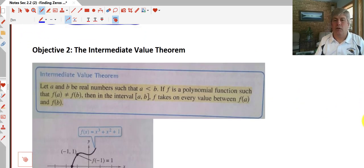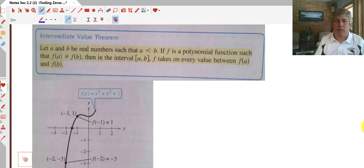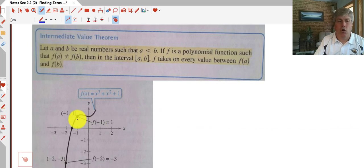Finally, the intermediate value theorem. The intermediate value theorem is a kind of a fancy way of saying that if we have a function and we know two of the points, we can narrow down that there has to be points in between. An intermediate value.